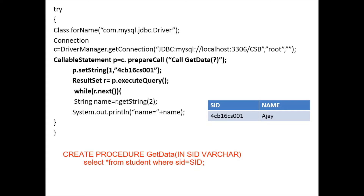To replace the question mark with a specific value, we use the method setX, where X is replaced by the type of the attribute. The attribute type is VARCHAR, which in Java corresponds to String, so we use setString. The column index of SID in the table is first, so we specify the first column and the value to replace the question mark — in this case '4CB16CL001'. Once we call the procedure, we need to get the name of the student belonging to this particular USN.